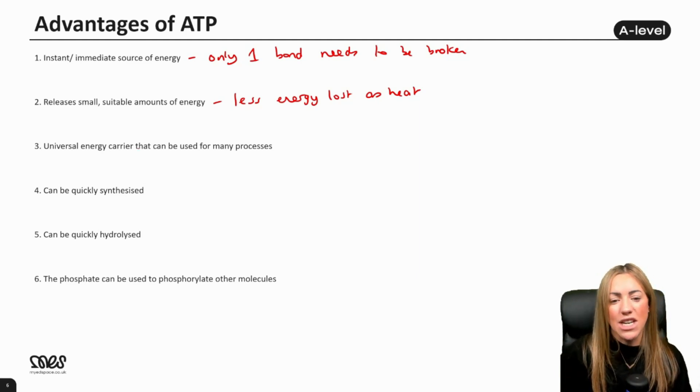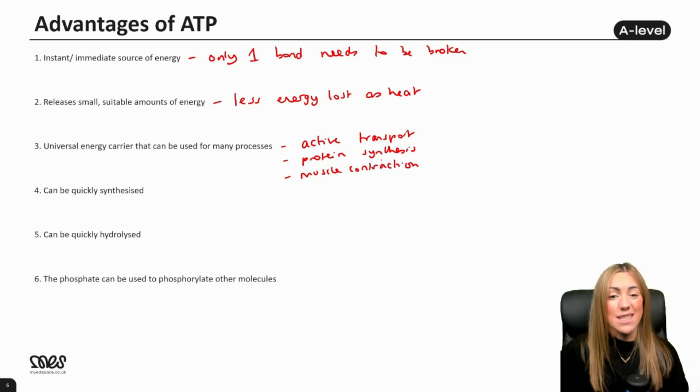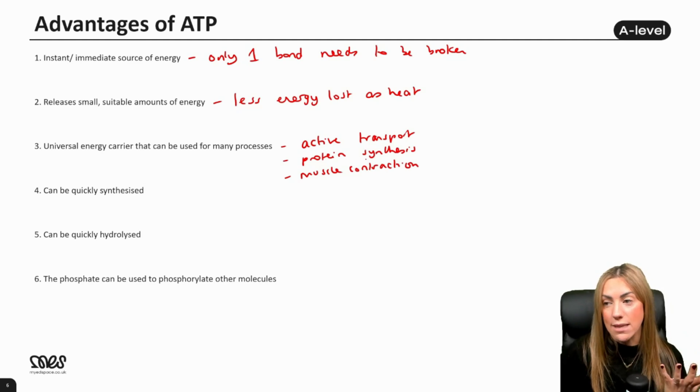It's a universal energy carrier, so all cells can use it and it can be used for many processes. For example, it can be used for active transport, which requires energy. It can be used for protein synthesis or the synthesis of any biological molecule. Synthesizing glycogen would be another good example. Muscle contraction is another really good example because that requires loads of energy from ATP.